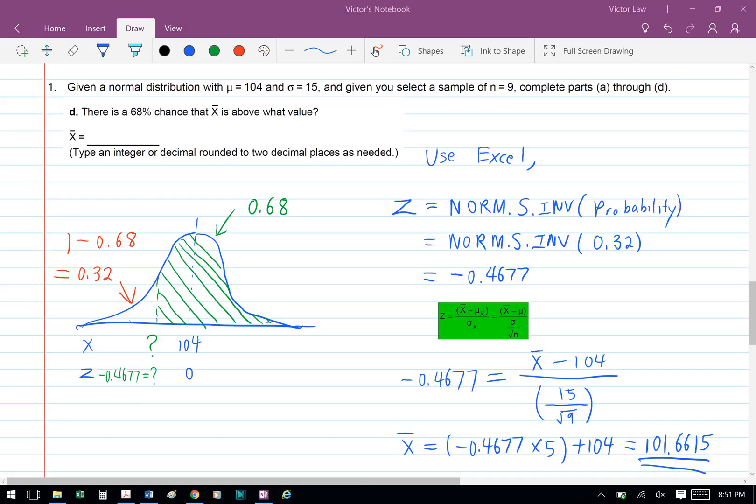Once we have the z value, we can use the formula z equals x bar minus mu over standard deviation over square root n. So we have negative 0.4677 equals x bar minus 104 over 15 over square root 9.